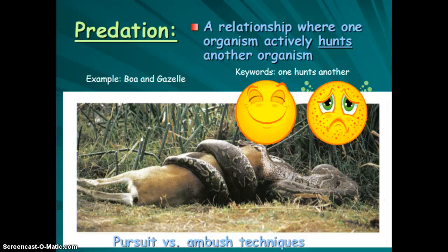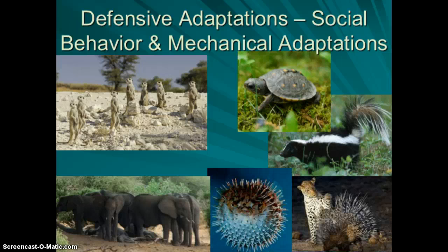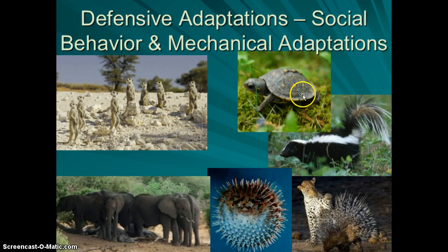Prey organisms have developed many defensive adaptations to avoid predation. Some are social or behavioral — the idea of strength in numbers, where animals form protective formations with young in the middle and larger adults on the outside. Others are mechanical adaptations: something physical about the animal that helps it defend itself, like a turtle's shell, a blowfish puffing up, or a skunk's scent glands.